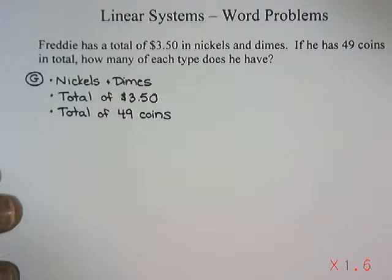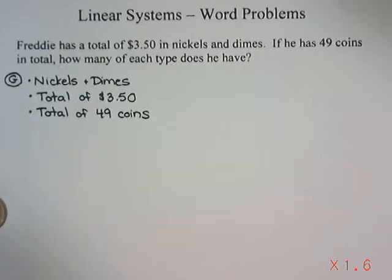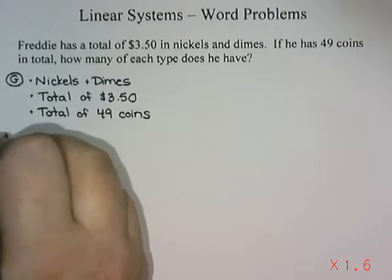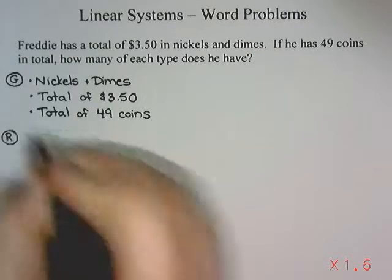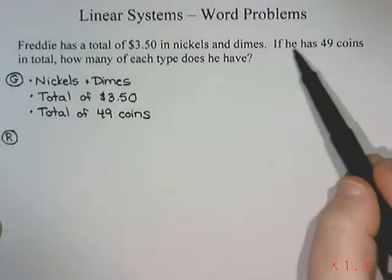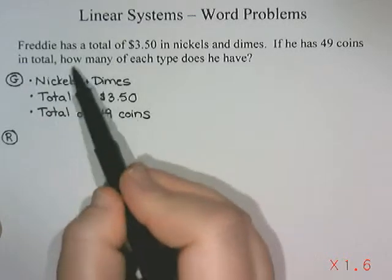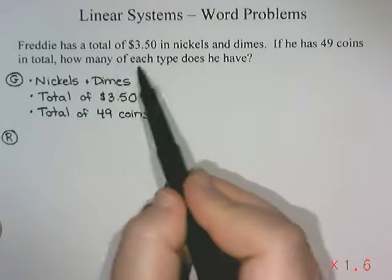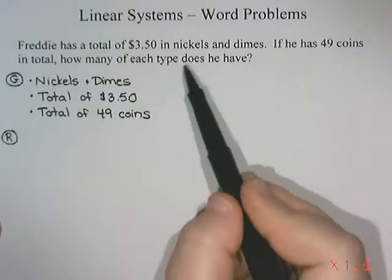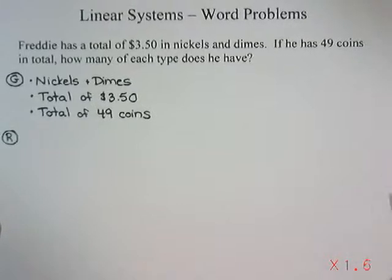That's all the information the question has given us. Our next step is R — the required. The last sentence helps: if he has 49 coins in total, how many of each type does he have? So the question wants to know how many nickels and how many dimes.